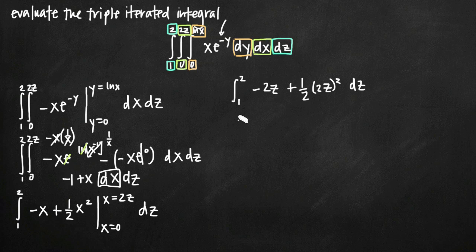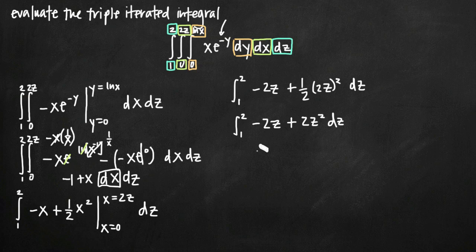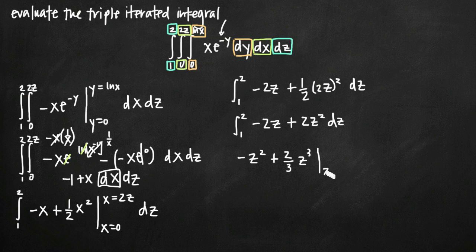Now we integrate with respect to z. Integrating negative 2z gives negative z squared — we divide by the new exponent 2. Integrating 2z squared gives plus two thirds z cubed. We evaluate on the interval z equals 1 to z equals 2.